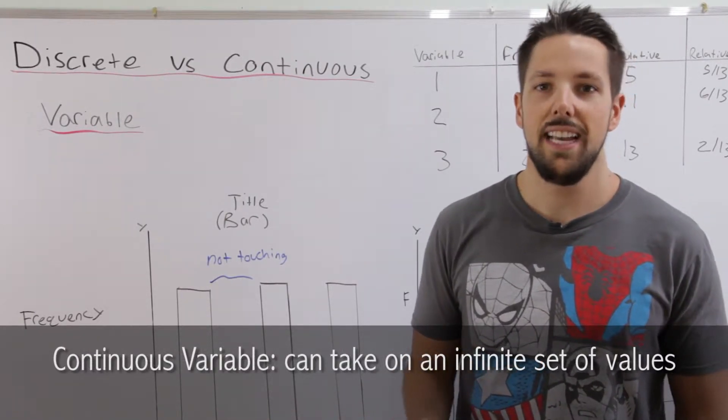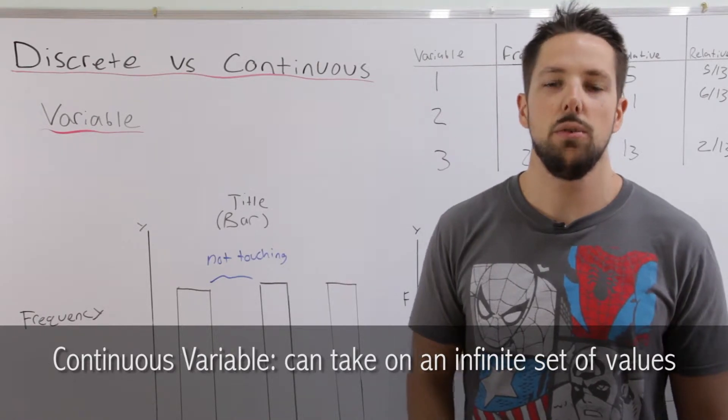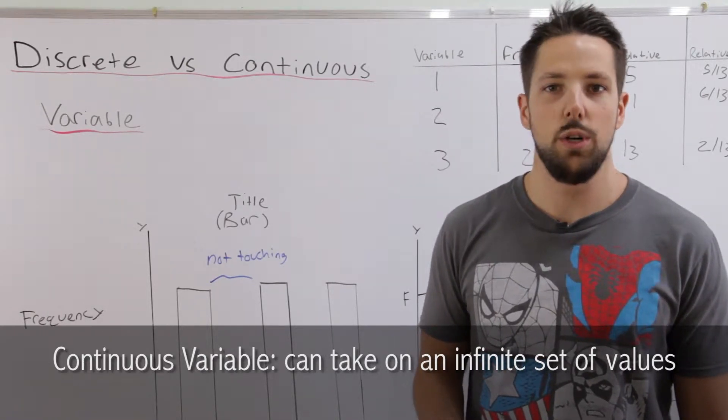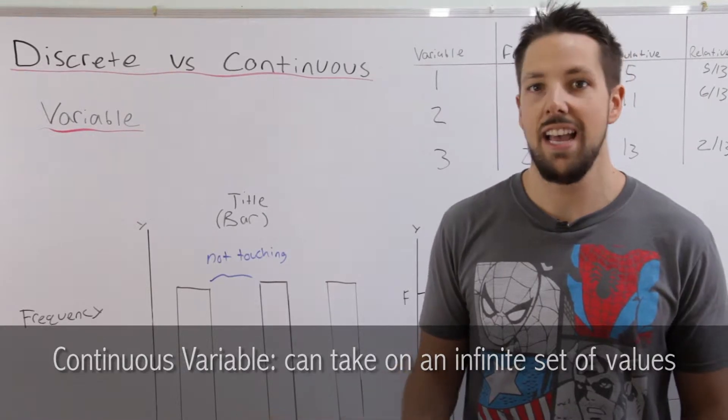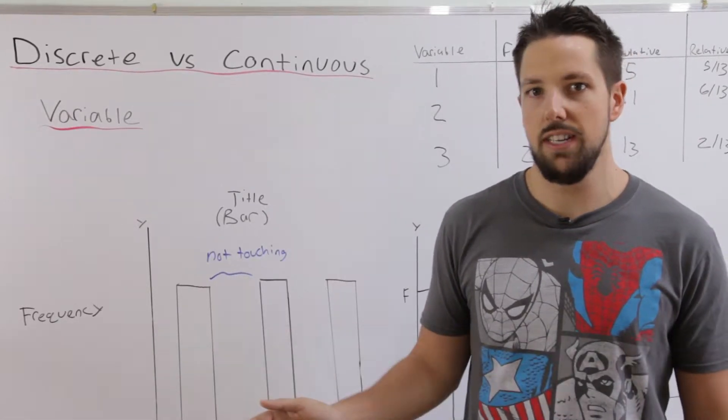Now a continuous variable can take on an infinite set of values. So it would be something like time or temperature. You have one degree, two degrees, and then an infinite number of degrees in between.